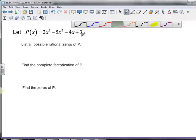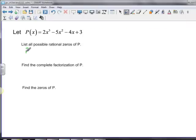List all possible rational zeros of the following polynomial: P(x) equals 2x cubed minus 5x squared minus 4x plus 3. The possible rational zeros we start off as p over q, where p is the factors of the constant term and q is the factors of our leading coefficient.